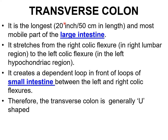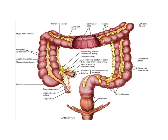About the transverse colon — it is the longest and most mobile part of the large intestine, about 20 inches (50 cm) in length. It stretches from the hepatic flexure in the right lumbar region to the left colic flexure in the left hypochondriac region, creating a dependent loop in front of the loops of small intestine. Correctly speaking, the transverse colon is not truly transverse — it is generally U-shaped.